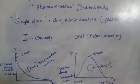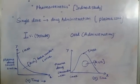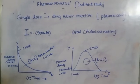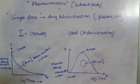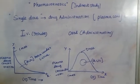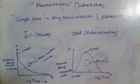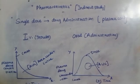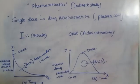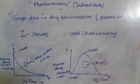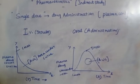In pharmacokinetics, we look at two things: drug administration, then plasma concentration, as well as urine excreted — that is, unchanged drug in the urine. Pharmacokinetics can be either single dose or multidose.